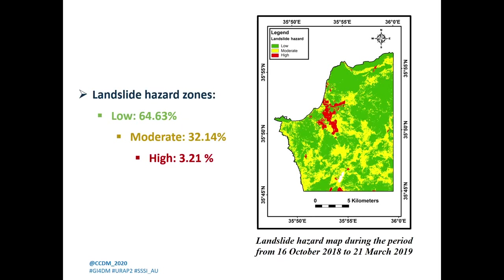As a result of using this intensity map and the susceptibility map from artificial neural networks in the landslide hazard matrix, the landslide hazard map during the study period was produced, which indicates the high hazard zones — shown here in red — as about 3% of the total study area.